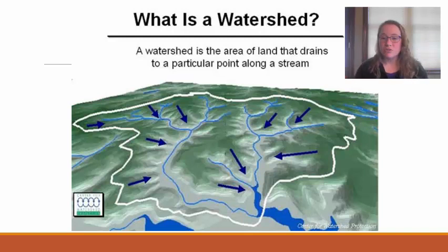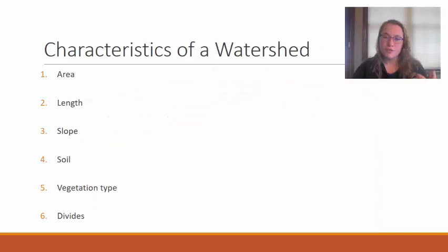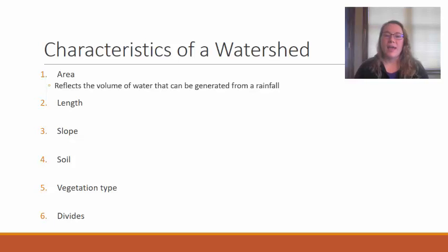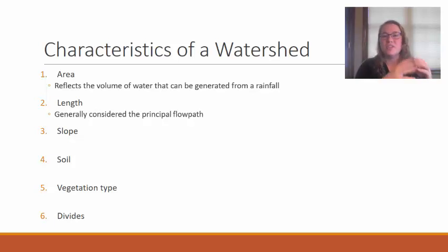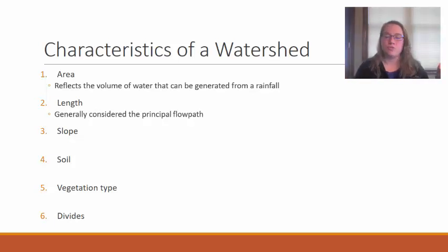There are several characteristics used to help classify a watershed, and we'll go through those one at a time. The first characteristic is the area, and the area reflects how much water can be collected and drained to a single location. The second characteristic is the length of the watershed, which is considered the general flow path from the headwaters region all the way down to the drain, which typically leads to the ocean.